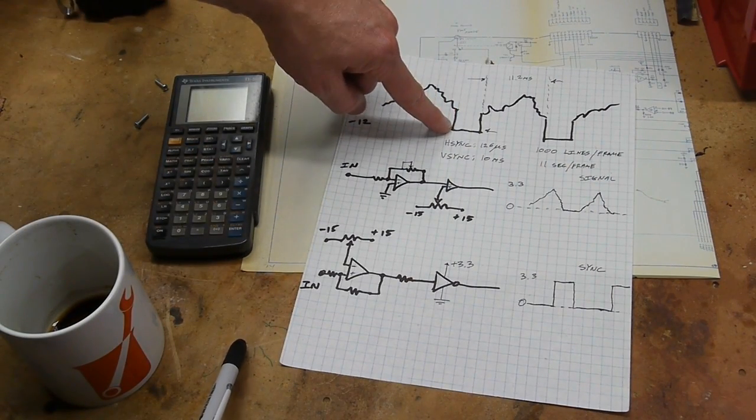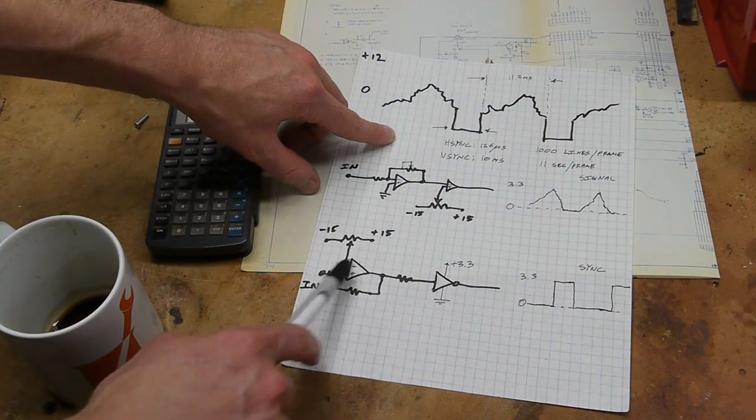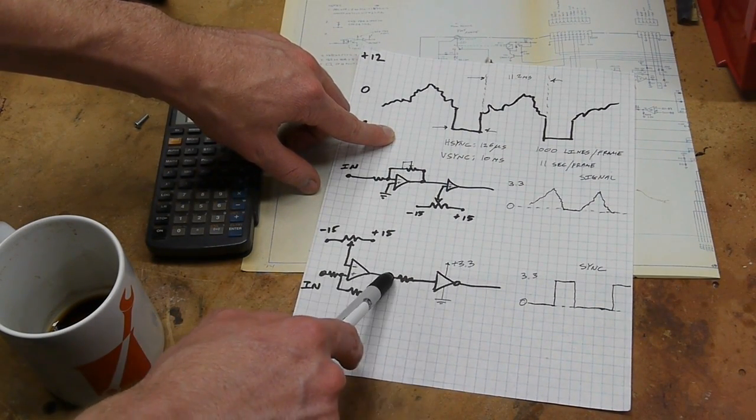This comparator quickly snaps over. Remember that this comparator is still using plus and minus 15 volt rails, but we want to get the signal to be 0 to 3.3.